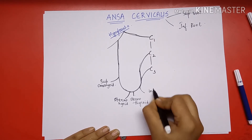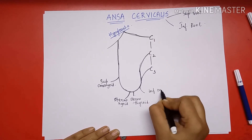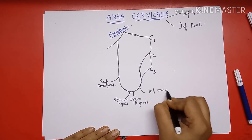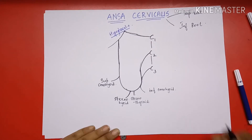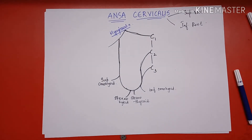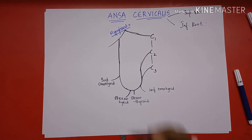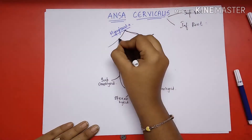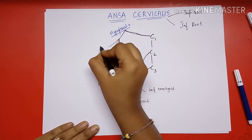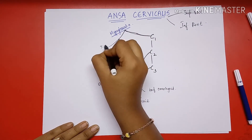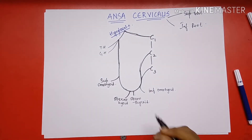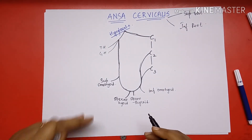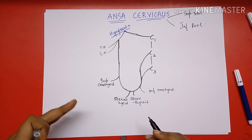The inferior root of ansa cervicalis supplies the inferior belly of the omohyoid. All these are infrahyoid muscles. Also, do not get confused with the thyrohyoid and geniohyoid.